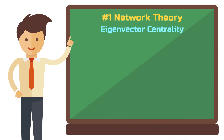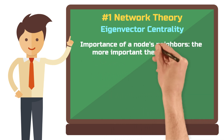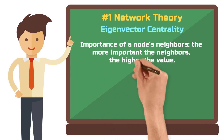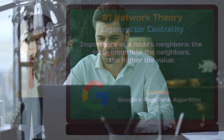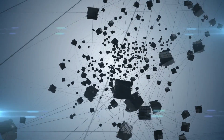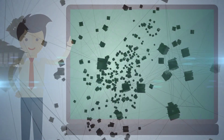Eigenvector centrality indicates how important the neighbors of a node are. The more important neighbors a node has, the higher the value. The best example of this measure is Google's PageRank algorithm. It follows the rule that a web page is ranked higher in search results the more other important pages link to it. So if I have a blog post on my website and it is linked by major sites like CNN, BBC and Forbes, it's better than if it is linked by two local newspapers and an unknown blogger.